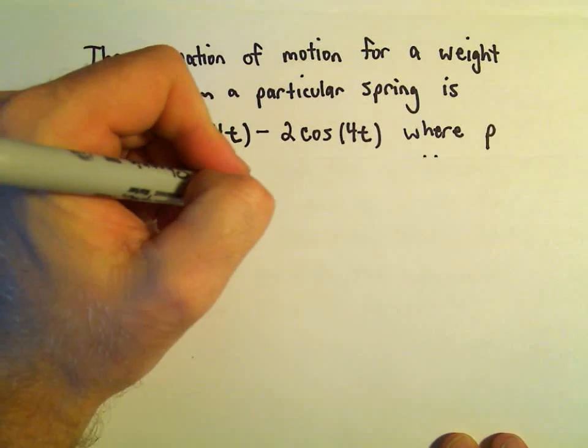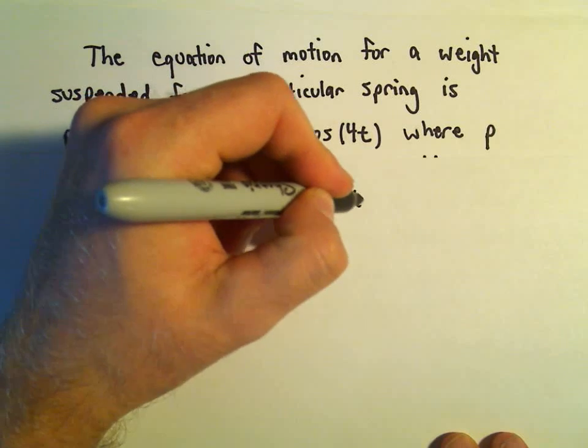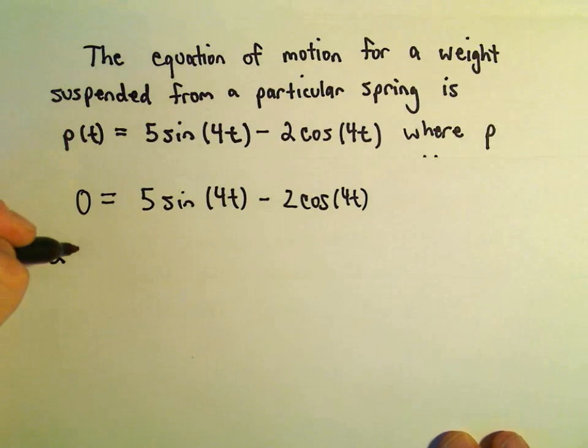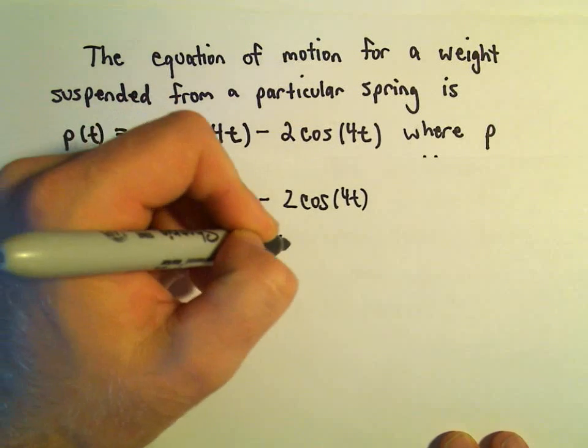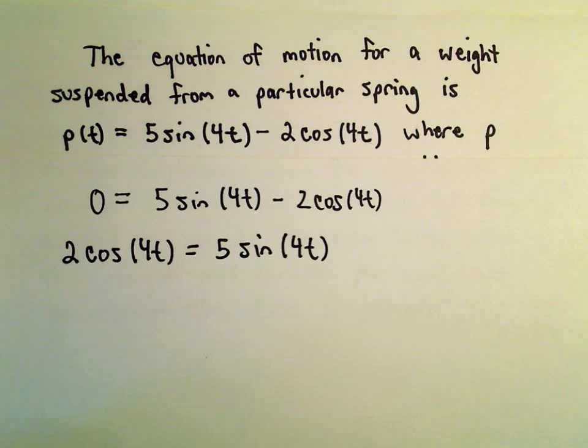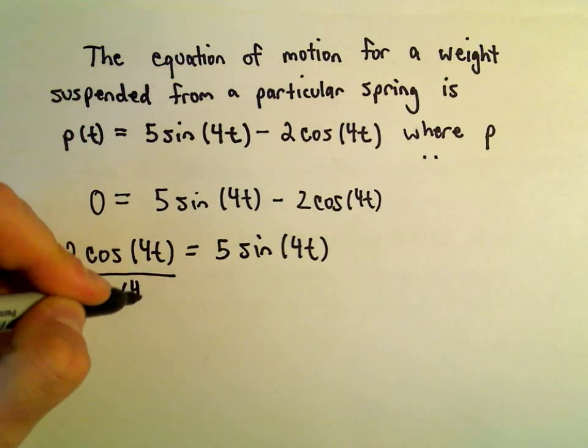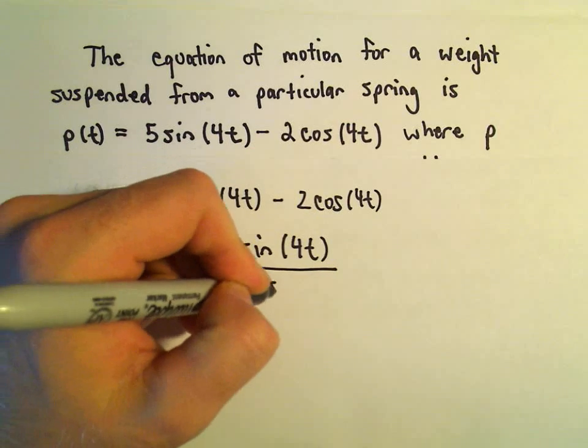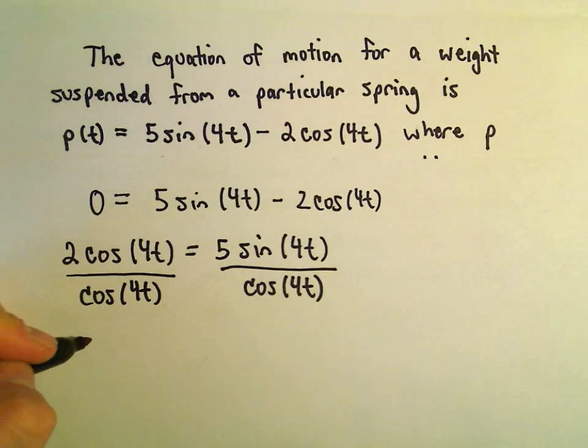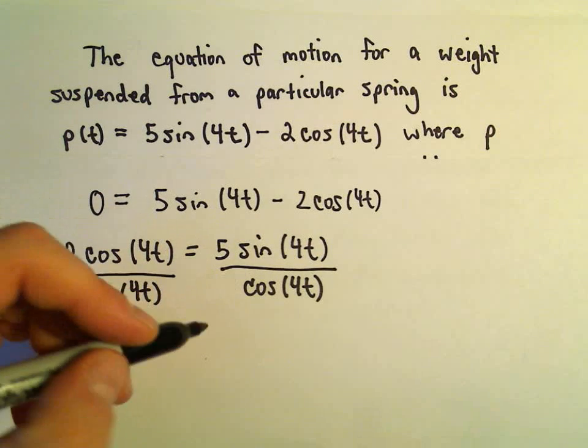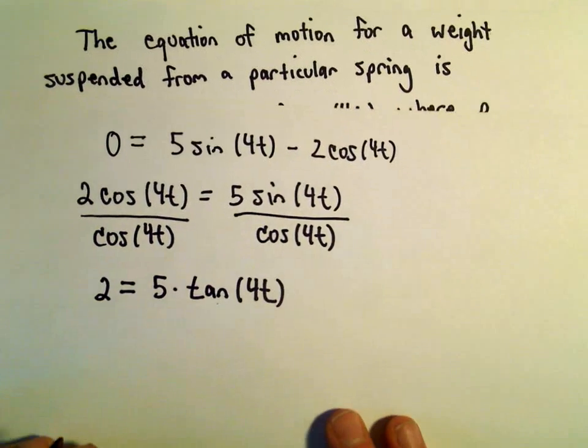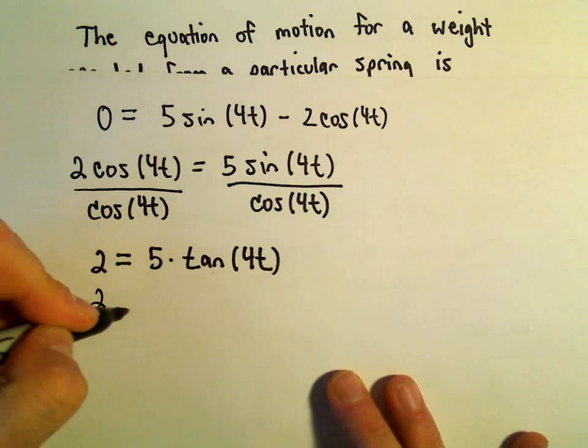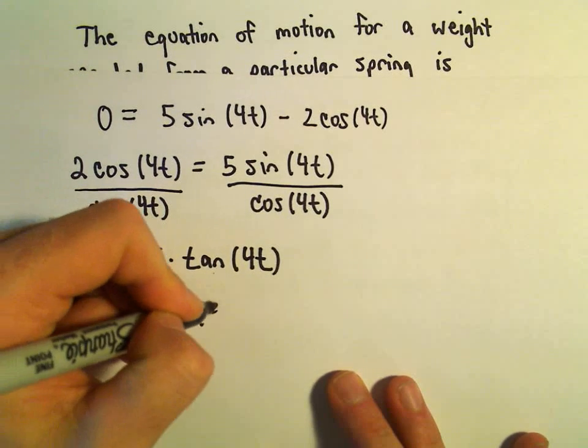We've got 5 sine of 4t minus 2 cosine of 4t. I'm going to add the 2 cosine of 4t to both sides. So we've got 2 cosine of 4t equals 5 sine of 4t. I'm going to divide both sides here by cosine of 4t. So we'll have 2 equals 5 times, well, sine over cosine is tangent, so we'll have tangent of 4t. And then we can simply divide both sides by 5.